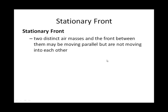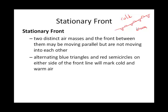A stationary front has alternating semicircles and triangles on its symbol — the triangles are blue and the semicircles are red. In this case, we have cold air on one side and warm air on the other — it's kind of a standoff. Stationary fronts will eventually cut loose, and often, as a mid-latitude cyclone matures, a stationary front breaks into a segment that becomes a cold front and a segment that becomes a warm front.